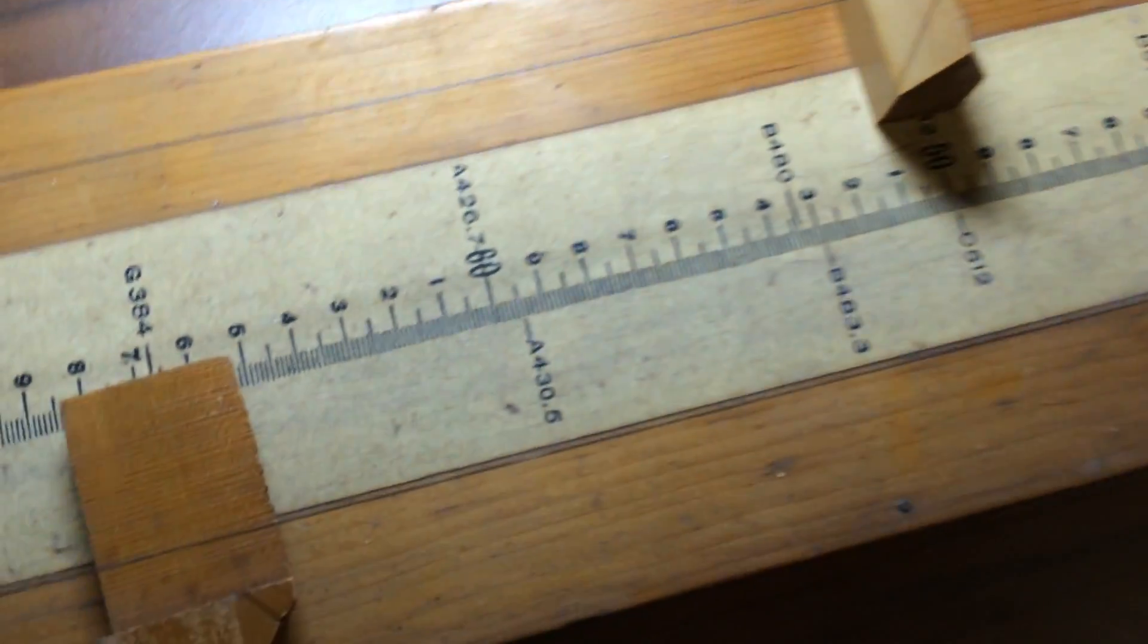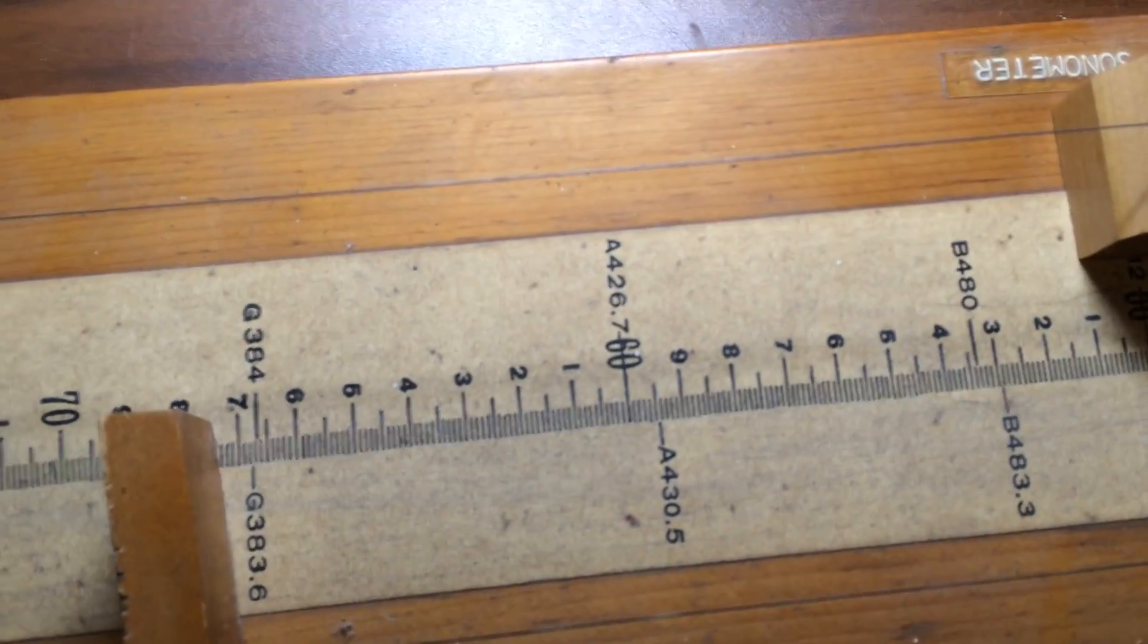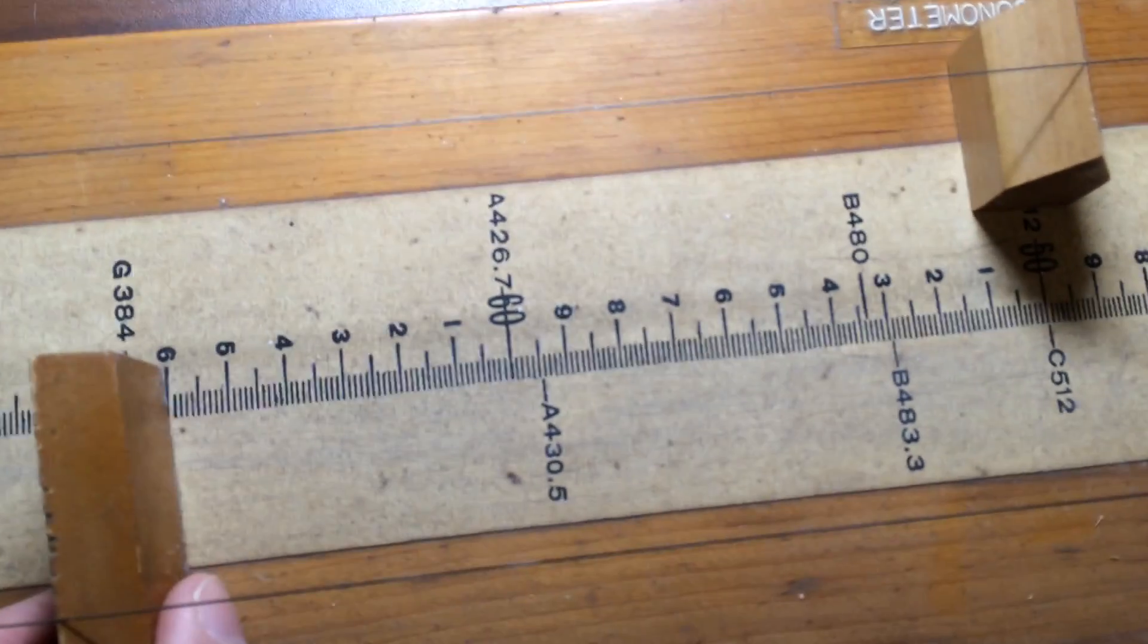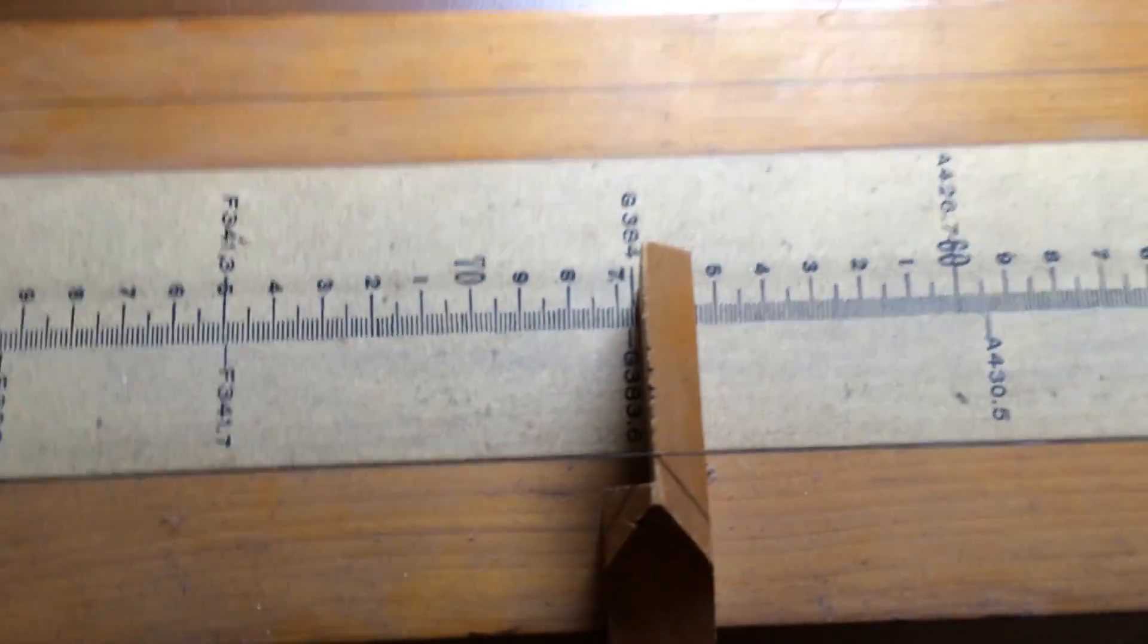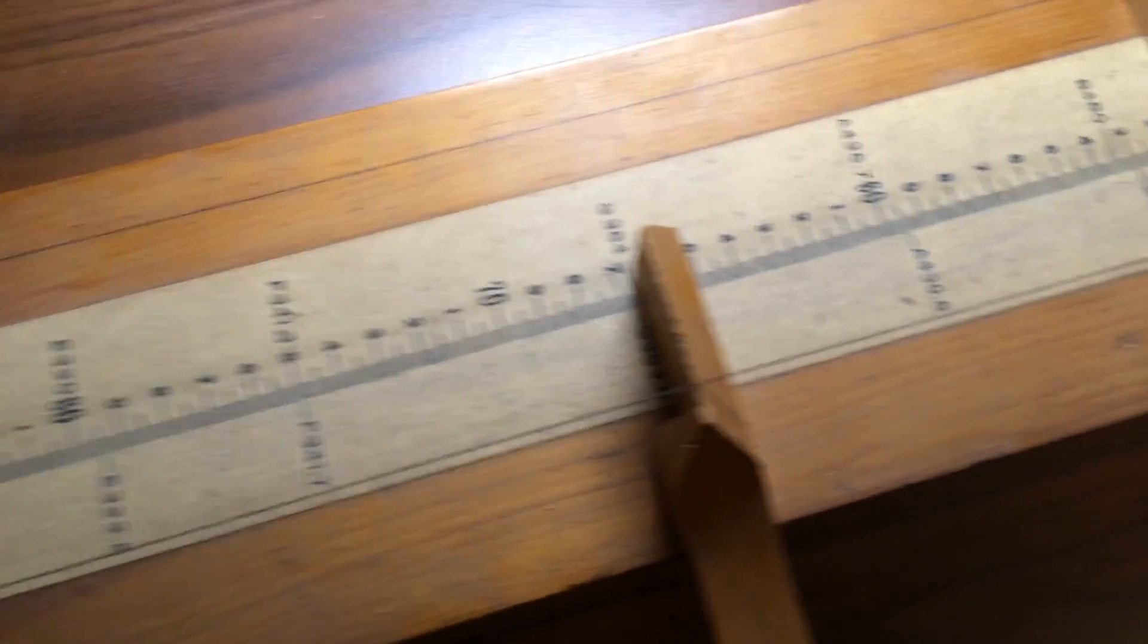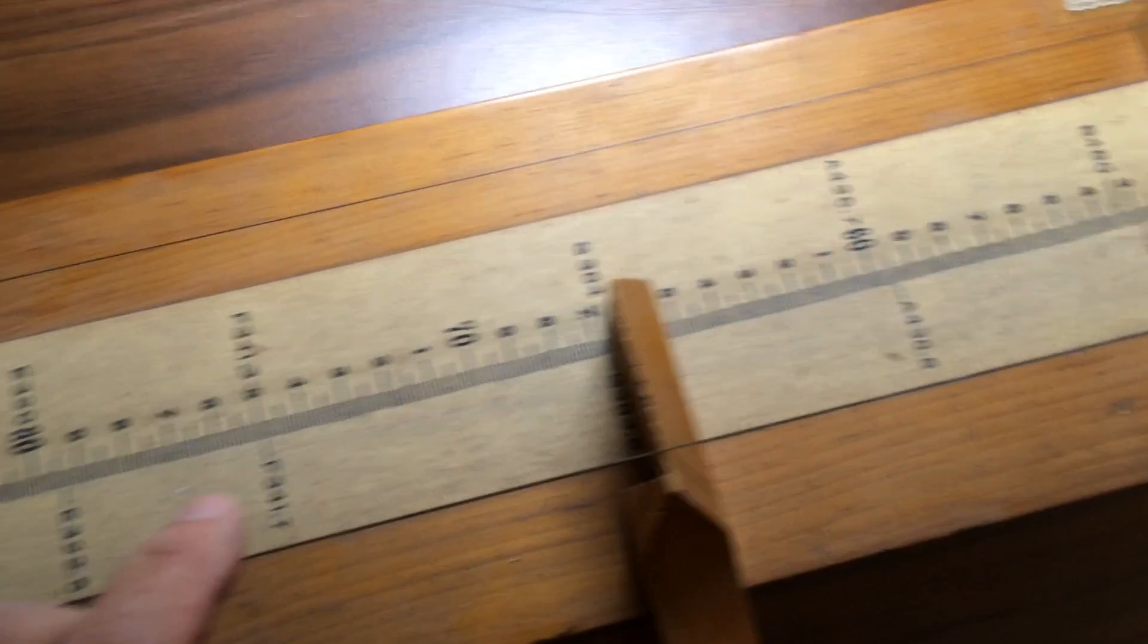If instead we put a block at two-thirds of the way, so this is 66.6 centimeters, this is what's called a perfect fifth, or a Pythagorean two-thirds ratio.